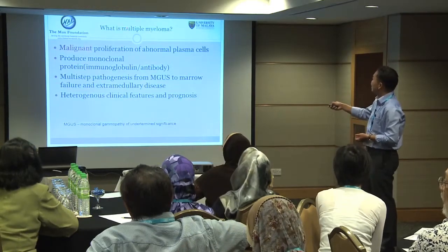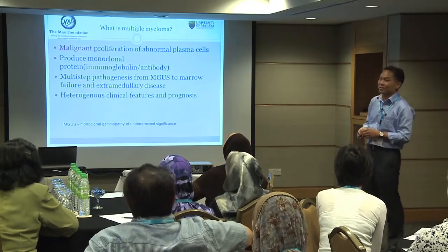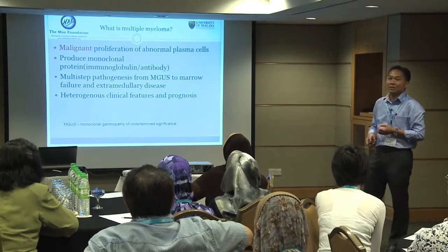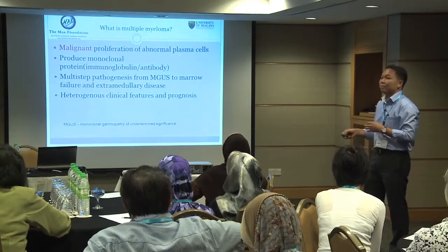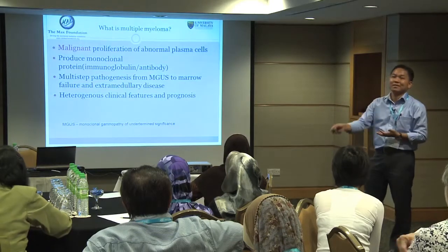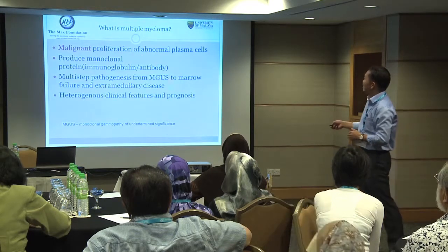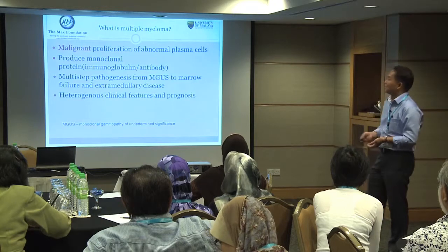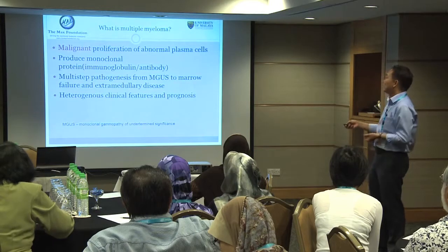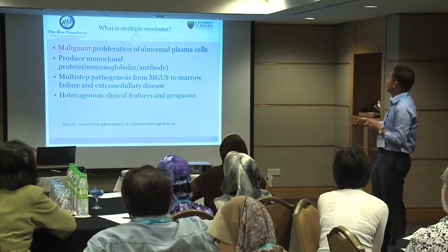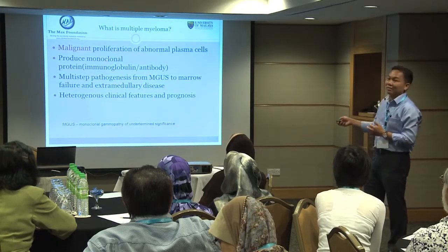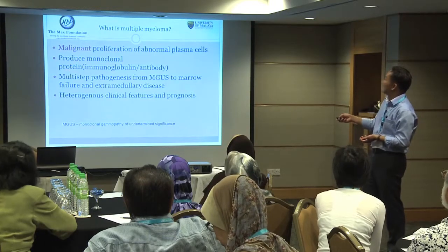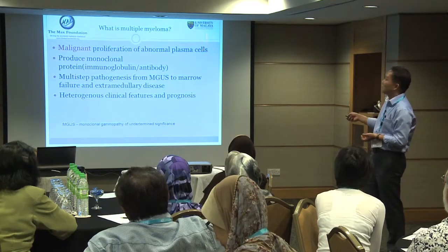In multiple myeloma, the plasma cells are abnormal — they are cancerous cells, different from normal plasma cells. They produce a lot of antibodies, what we call monoclonal protein. In a normal situation when you have an infection, you have many types of plasma cells producing different types of antibodies which work together to kill bacteria. But in multiple myeloma, because these are cancerous cells, they only produce one type of antibody, and they produce a lot of it. At the same time, normal antibodies are not produced because the abnormal plasma cells suppress the normal plasma cells. We call it monoclonal because there is only one type of antibody from one clone of abnormal plasma cells.